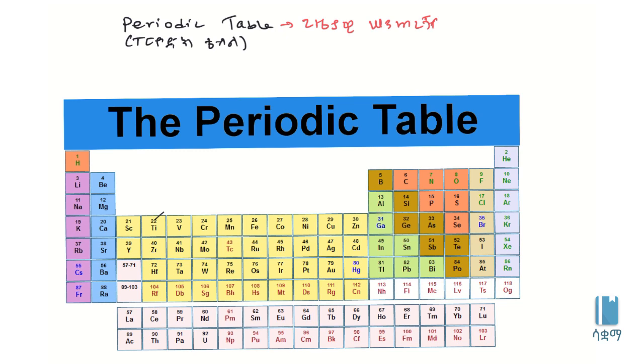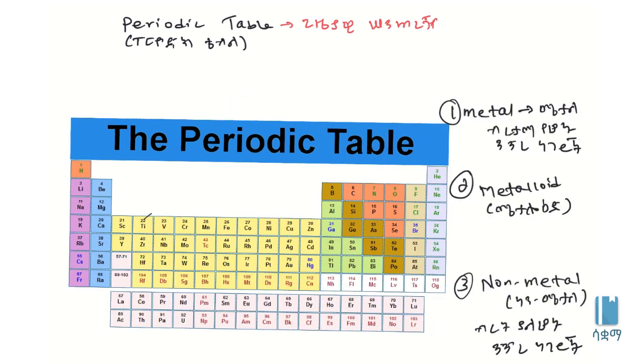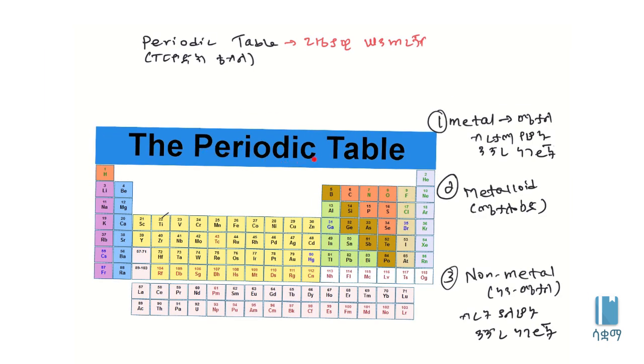Scientists developed the periodic table to organize elements systematically. They studied nitrogen and other elements extensively. The periodic table chapter helps us understand how elements are arranged based on their properties and characteristics, making it easier to study them.